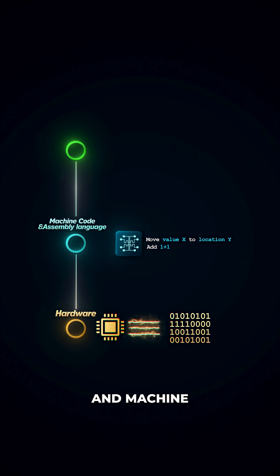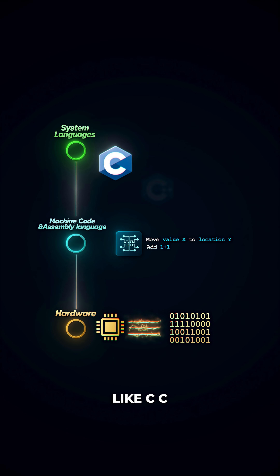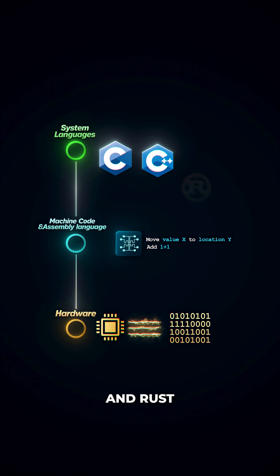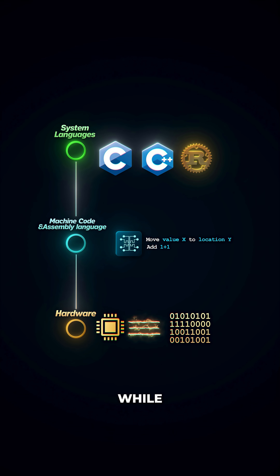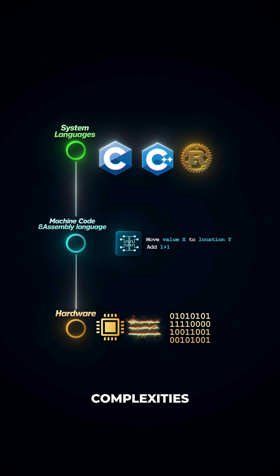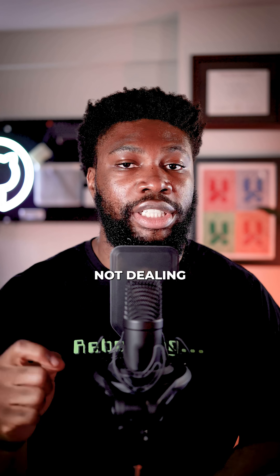Above assembly and machine code, you have system languages like C, C++, and Rust. These languages give developers more control while abstracting away some of the raw complexities of hardware interactions. You still have direct access to memory management and can optimize for performance, but you're not dealing with individual processor instructions.